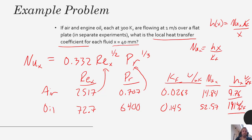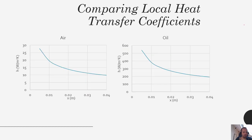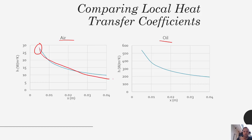Let's look at the convection coefficients plotted as a function of x. For air on the left and oil on the right, you see a relatively higher local heat transfer coefficient at the beginning of the plate near the leading edge, and then it gradually decreases because the boundary layer grows thicker and thicker. There's more physical space for heat to propagate through before it gets from the surface up to the bulk fluid or free stream.